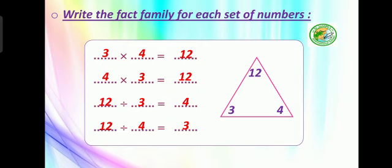What is the relation between multiplication and division for the fact family? We have 12, and the factors of 12 are 3 and 4. If we multiply 3 times 4 equals 12, and 4 times 3 equals 12 also. But if we divide the larger number by each factor: 12 divided by 3 equals 4, and 12 divided by 4 equals 3.